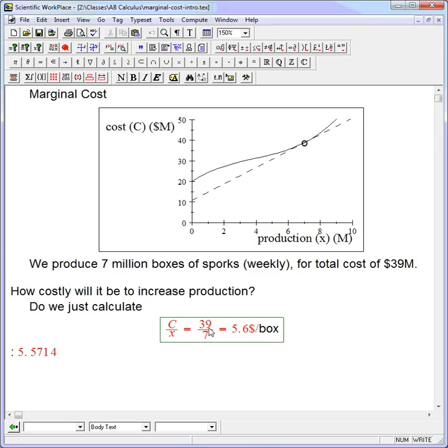Well, let's see if that makes sense. What does that do? That takes the entire production of 7 million and the entire cost, and divides the entire cost by the entire production. But what we're really interested in is changing the production level, increasing the production level. And if you look here, there's a very crucial thing: it costs us 20 million dollars just to have the factory at all and not to produce any sporks, like if we had a holiday week or a strike or something.